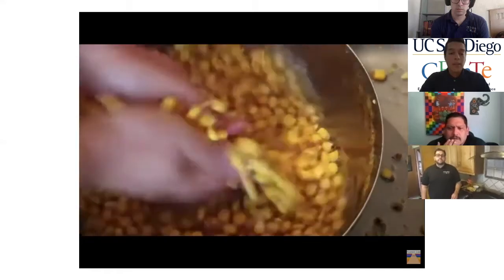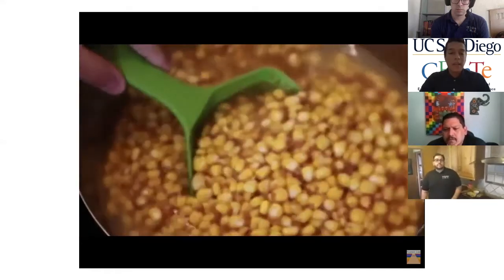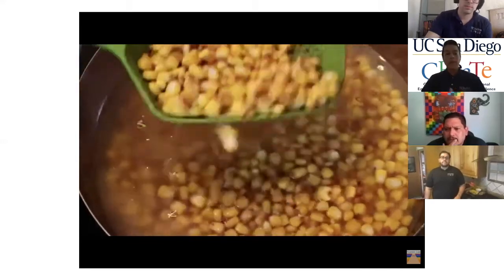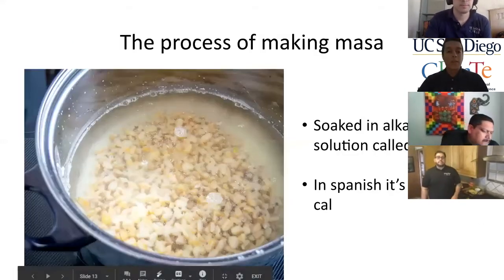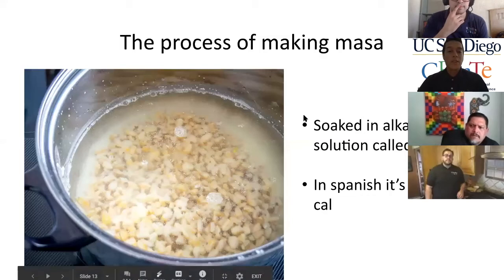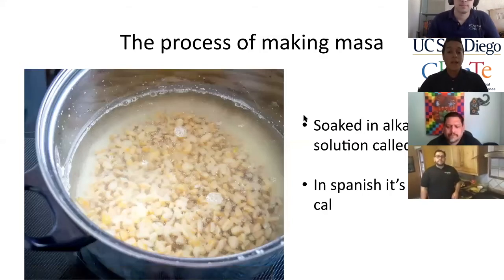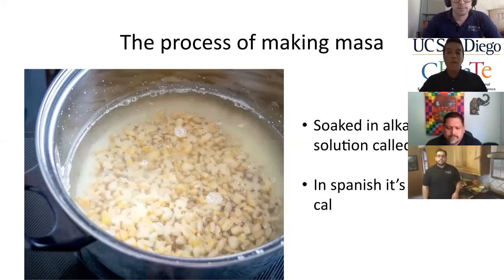That will end our video. Now that you've seen the process, we're going to talk a little bit more about the chemistry of making masa. This process is called nixtamalization, also known as the old school process.